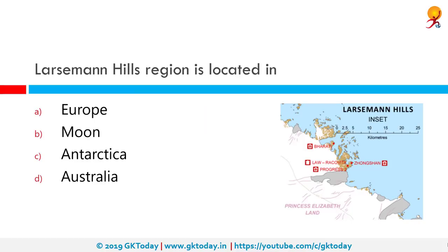The Larsemann Hills region is located where? It is located in Antarctica. The Larsemann Hills are a series of low rounded coastal hills along the southeastern shore of Prydz Bay, Antarctica.